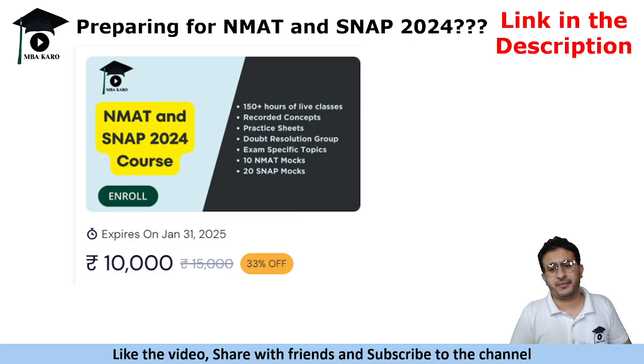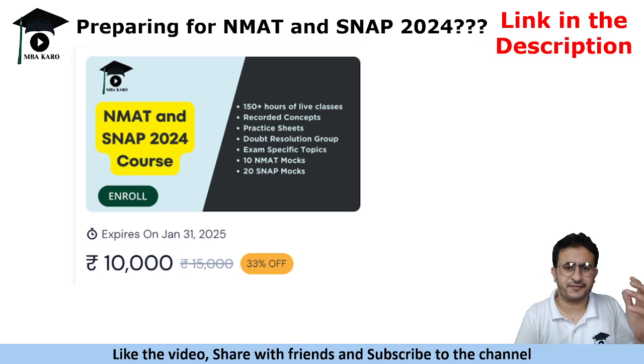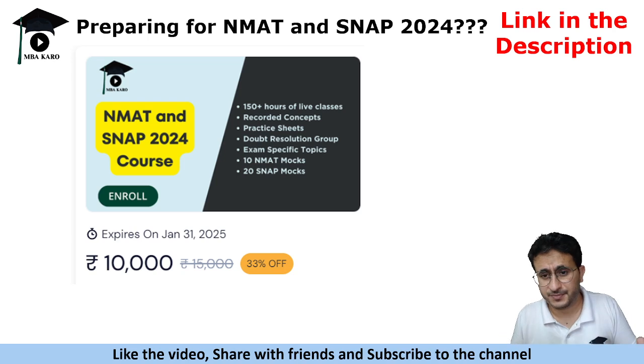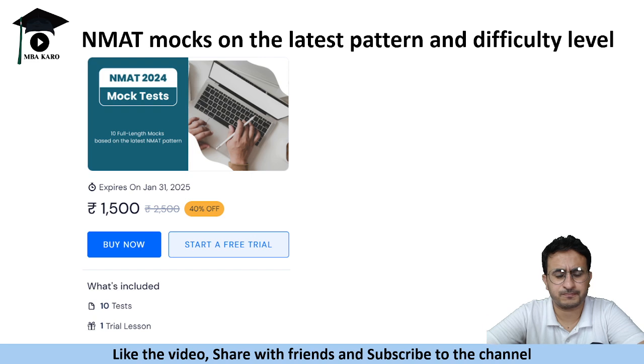In case you are preparing for NMAT and SNAP, we have a dedicated course for these examinations, in which we cover exam specific topics. As I said that, let us say, data sufficiency is asked in NMAT. So, we will have classes on data sufficiency. Similarly, permutation combination, we will teach in detail, the question types which are asked in NMAT. And all the topics in all the sections shall be covered which are exam specific. Let us say, in logical reasoning, you have critical reasoning. So, we have a lot of classes on critical reasoning. Similarly, in English, you have certain topics which are tested. That will be covered in this course, exam specific topics for both these exams. And additionally, you will get 10 NMAT mocks plus 20 SNAP mocks. If you wish to enroll in the course, you can check out the link given in the description of this video.